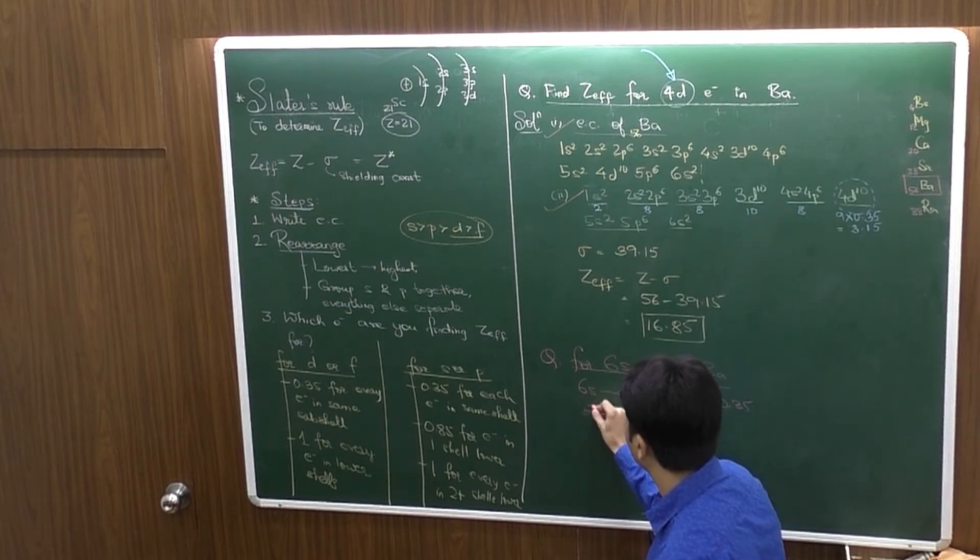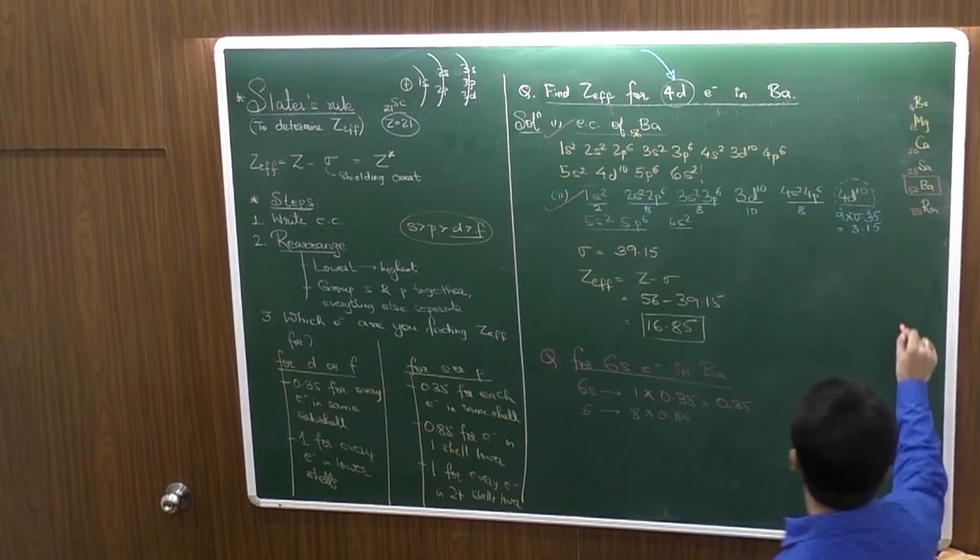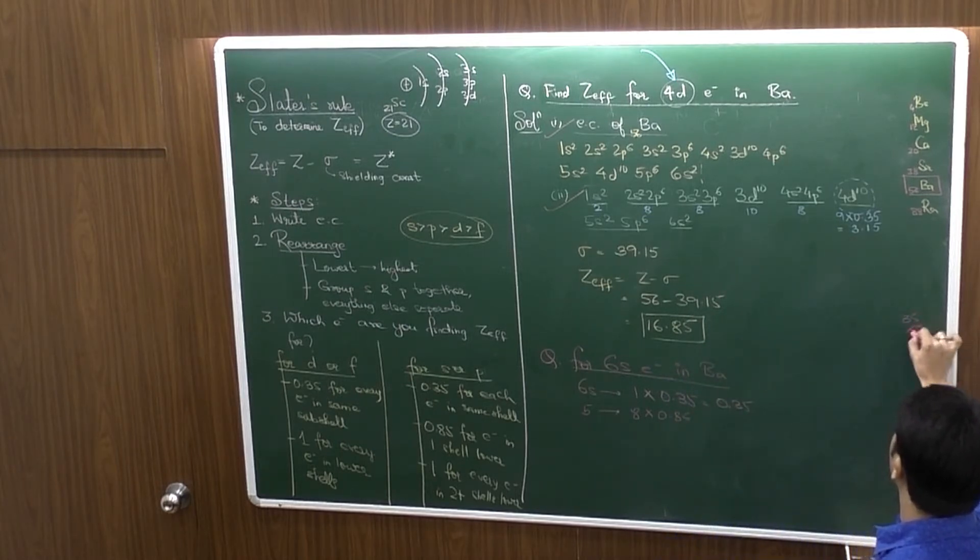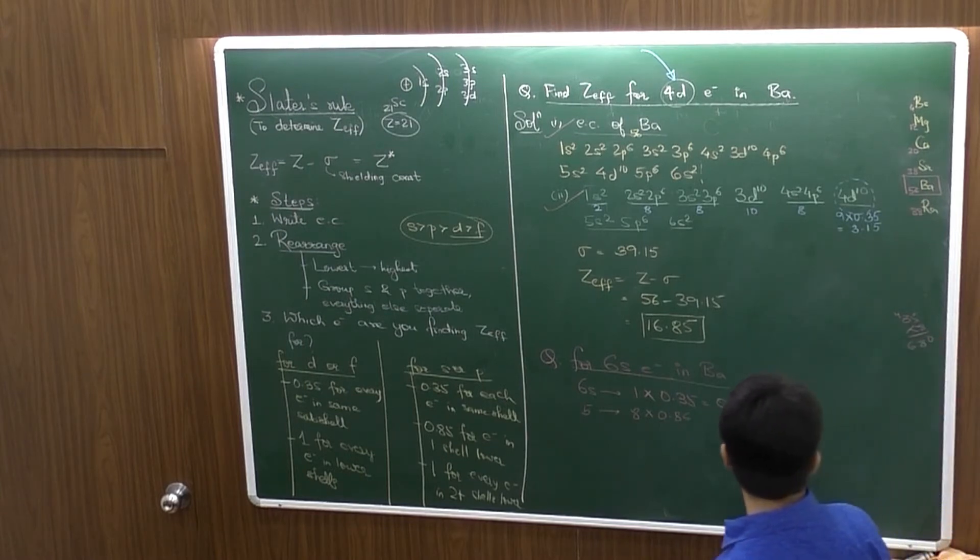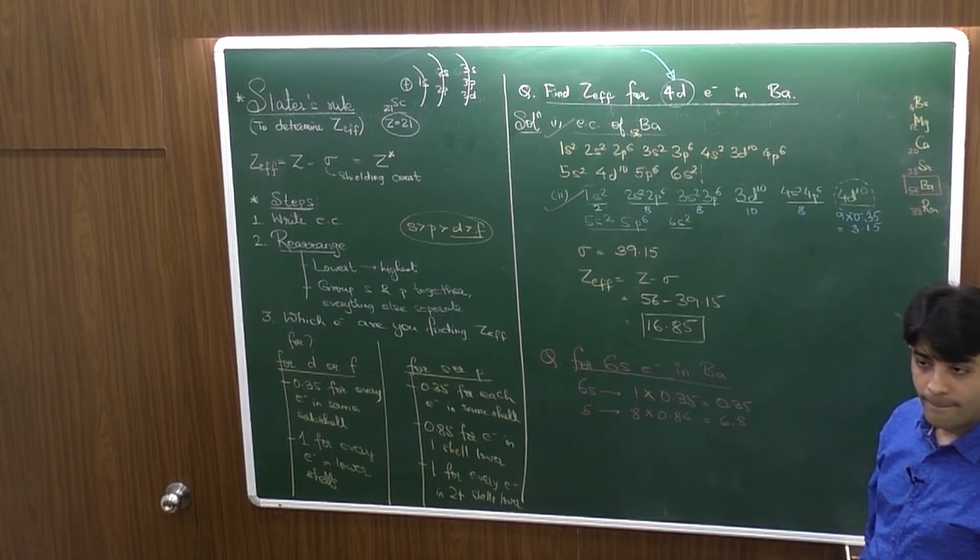Then lower, 1 shell lower is 5. How many electrons? 8. Multiply by 0.85. 8 times 0.85 is 6.8.